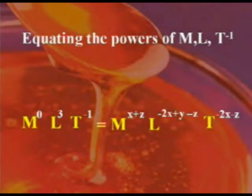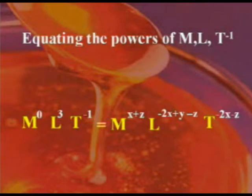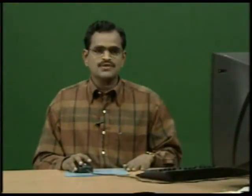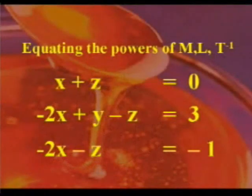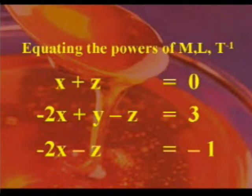Equating the powers of M, L, and T, we get three equations: x plus z equal to 0; minus 2x plus y minus z equal to 3; and minus 2x minus z equal to minus 1.